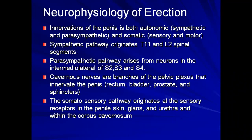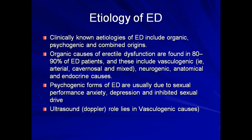The somatosensory pathways have receptors in the penile skin, glans, urethra, and within the corpus cavernosum. Moving to the causes of erectile dysfunction: these fall into organic causes, psychogenic causes, and combined origins. Organic causes include vasculogenic (arterial, cavernous, or mixed), neurogenic, anatomical, and endocrine causes such as thyroid disease and hypogonadism.